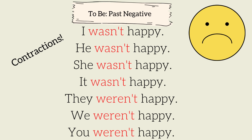To use these negatives with a contraction, we shorten the word. Let's listen and repeat. I wasn't happy. He wasn't happy. She wasn't happy. It wasn't happy. They weren't happy. We weren't happy. You weren't happy.